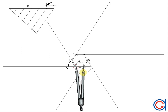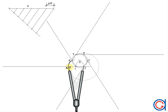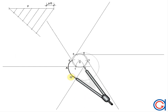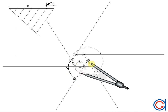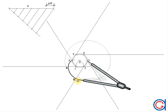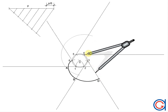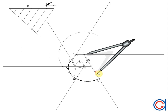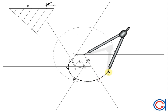Now continuing with our compass set on point two and length two A, we scribe an arc down until it cuts the prolongation at point B. Continuing with our compass set on point three and length three B, we scribe an arc to the right until it cuts the following prolongation at point C. Now continuing with our compass set on point four and length four C, we scribe an arc until it cuts the prolongation at point D.